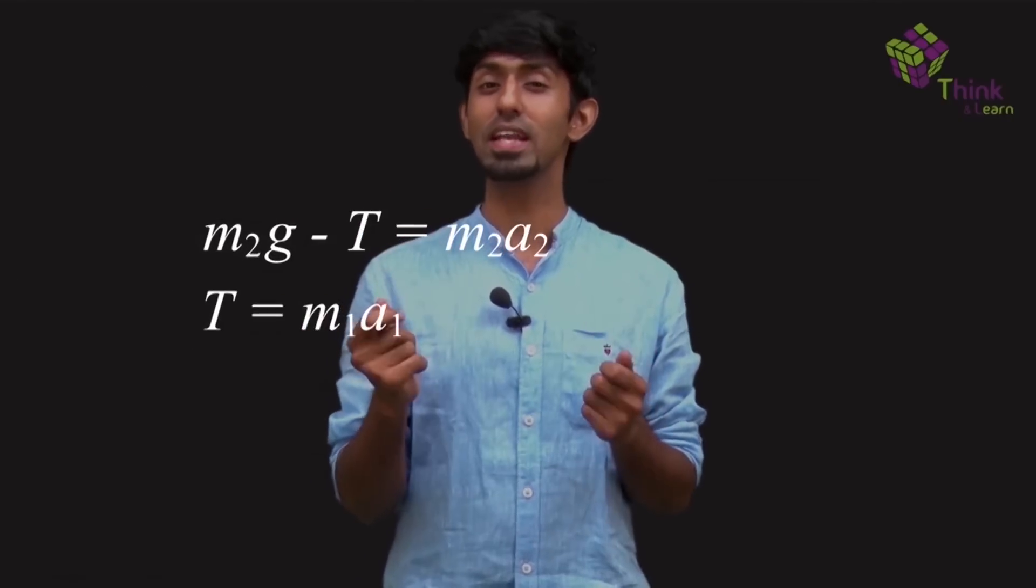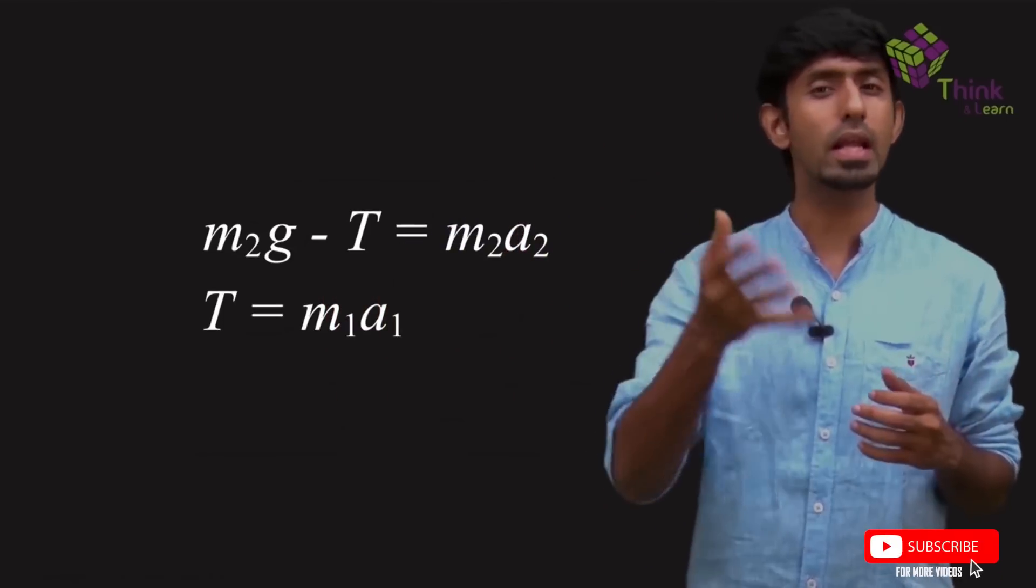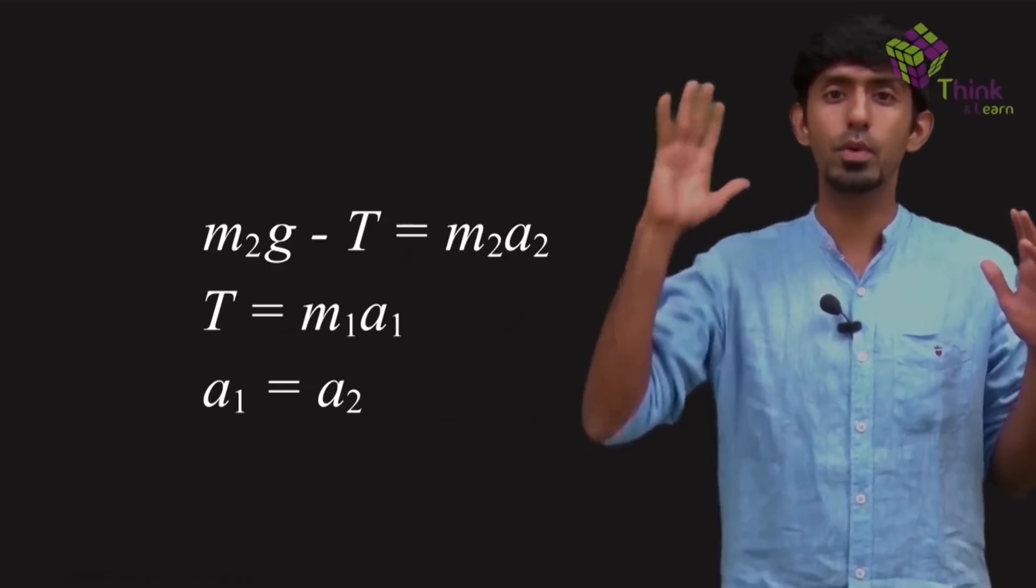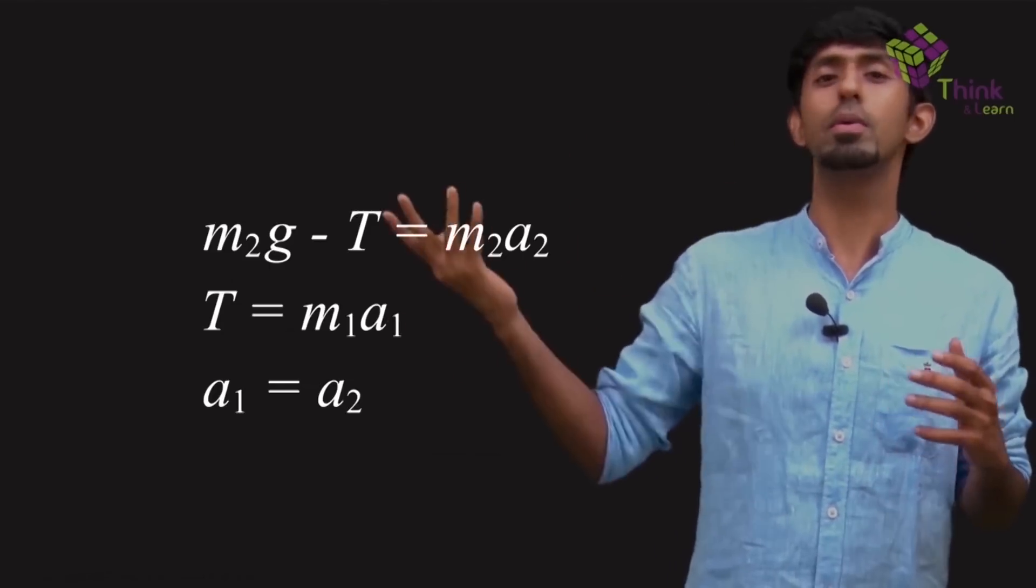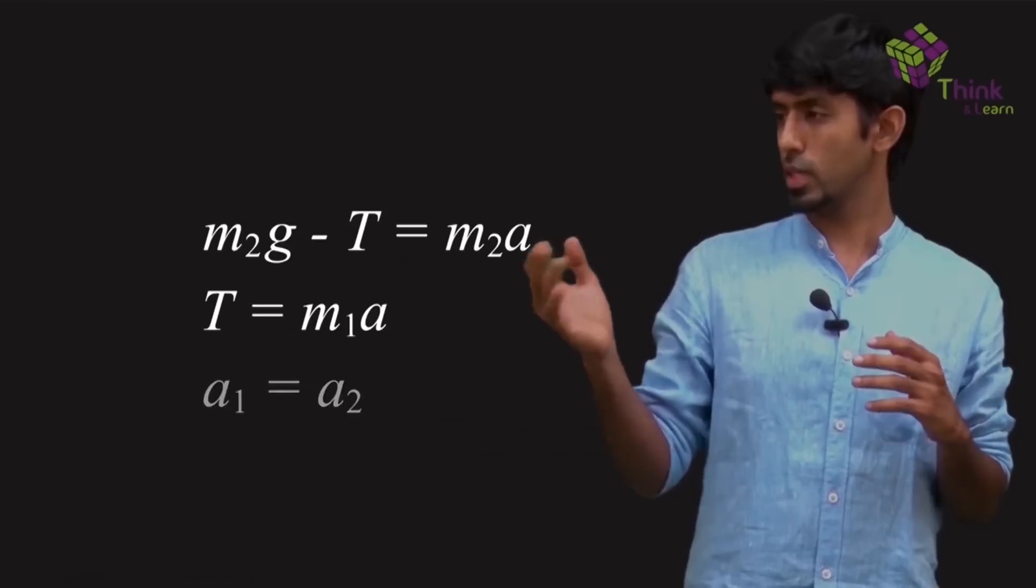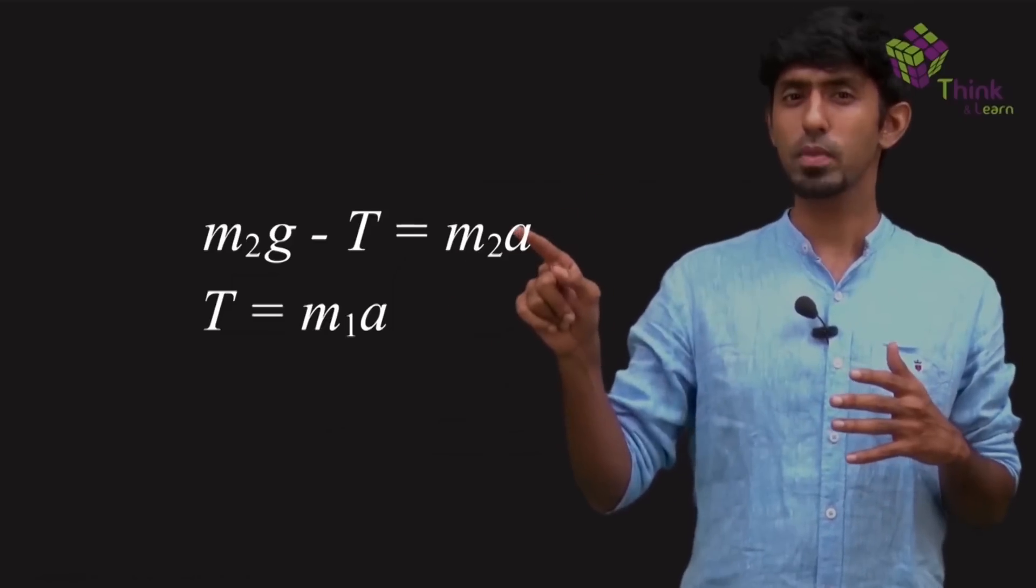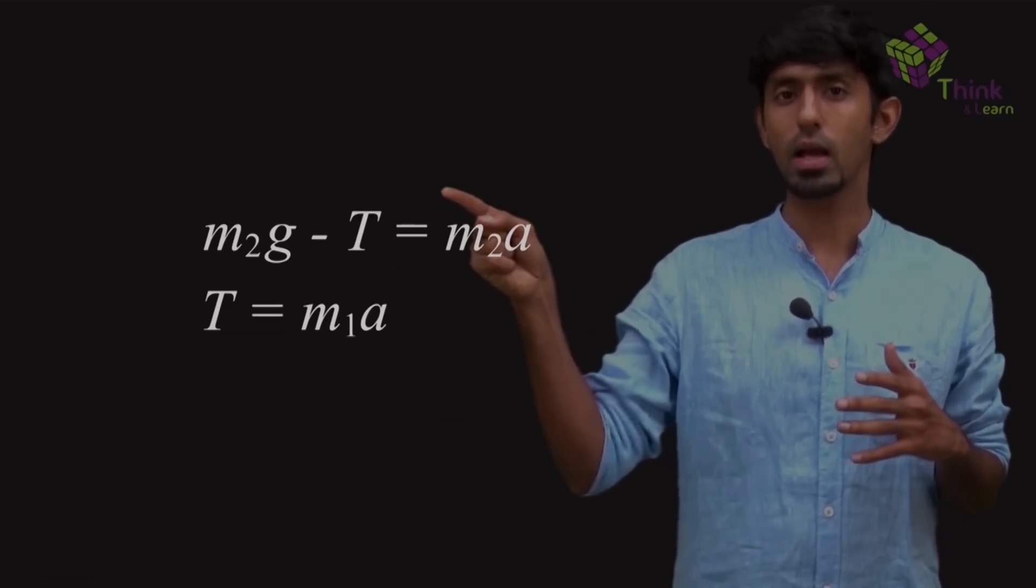This means I finally have my third equation. And because a1 and a2 are just the magnitudes, I can directly write that as a1 equals a2. Now I finally have three equations and three variables. If I replace both a1 and a2 because they're equal with a common variable a, then the equations look like this, which means I have two equations with two variables, of which I want my T, a tension and I can also find out my a.